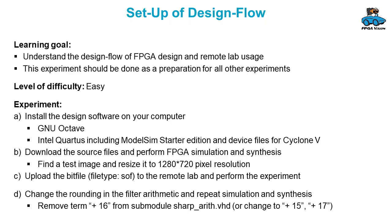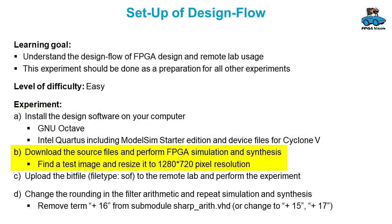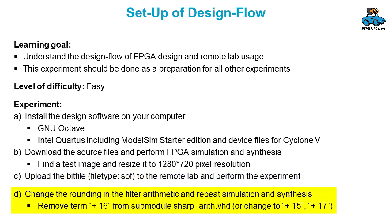The first experiment is intended for setting up the design flow. You install the design software on your computer, download the source files, and perform simulation and synthesis. You can also upload the result on the remote lab and check if the experiment is working. You can make small changes to see how this is reflected in the result of simulation and synthesis.